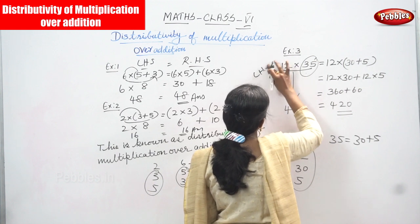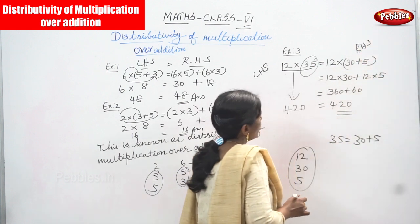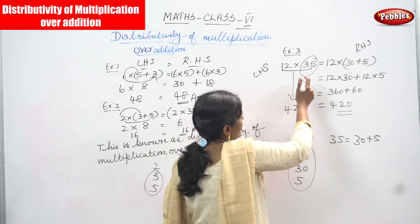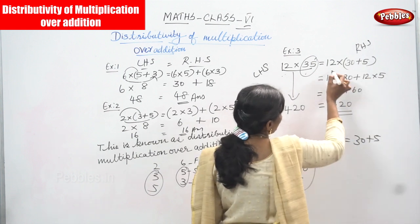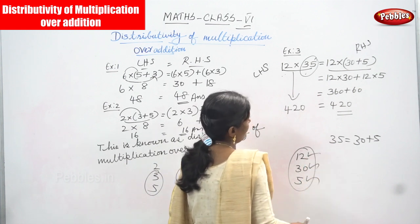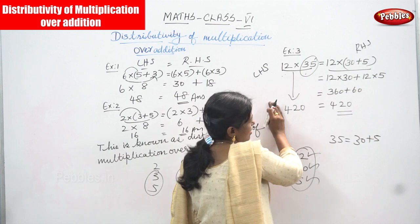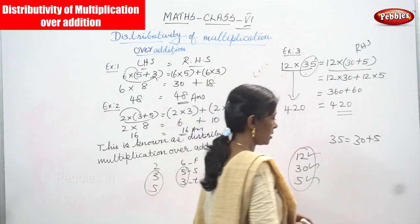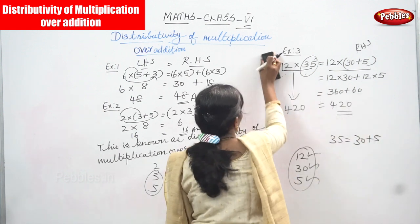The LHS is just 12 into 35 — simply multiply together. 12 into 35 gives us 420. We split as 12 into 30 plus 5, giving three numbers: 12, 30, and 5. Simply multiplying 12 into 35 gives 420 — no problem with that.